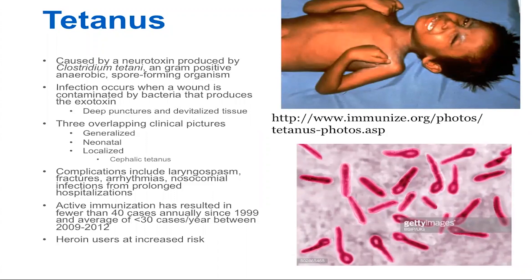The top picture shows generalized disease. You can have trismus, which is where it's very hard to open the mouth, and then severe muscle spasms with dysautonomia — so very labile blood pressures and arrhythmias. That systemic disease is the most common type. You can also have the neonatal form where infants are sick because they don't receive passive immunity from the mother, and you can have localized disease with just local muscle spasms.